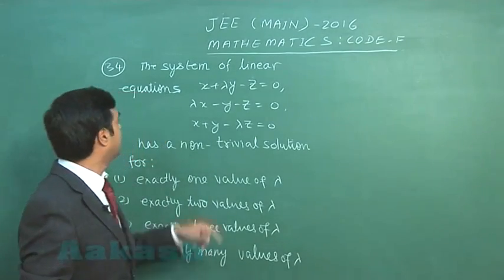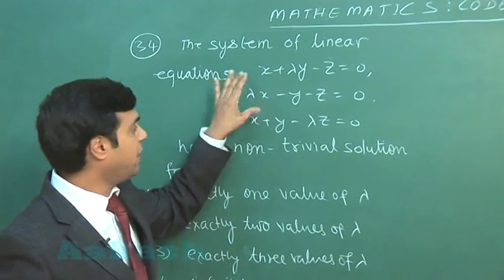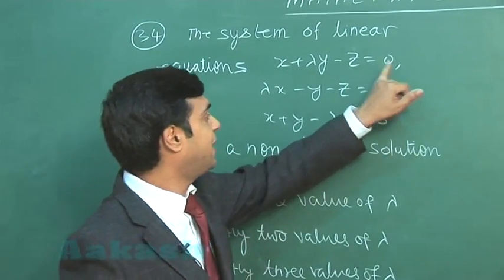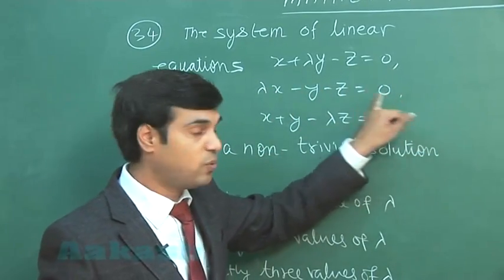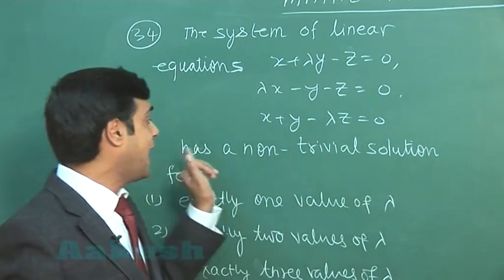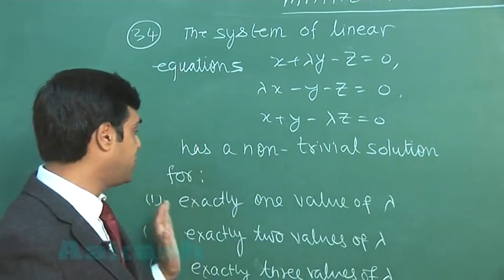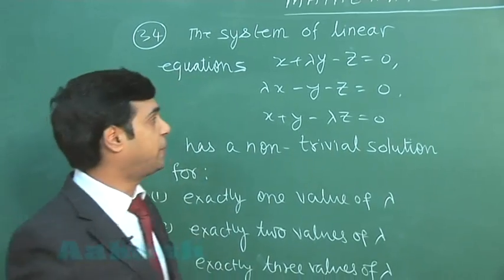Okay, let us take the 34th. The system of linear equations: three equations are given. x + λy - z = 0, λx - y - z = 0, x + y - λz = 0 has a non-trivial solution for how many values of lambda? It is mentioned among the options.